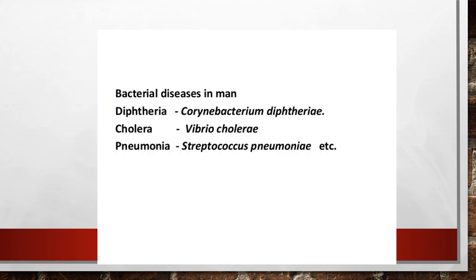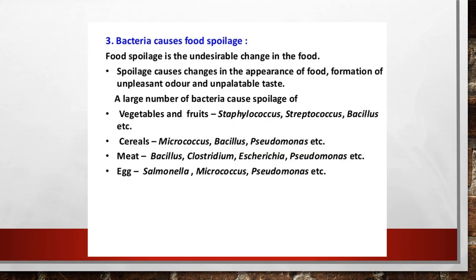Bacteria causing diseases in human beings include: diphtheria caused by Corynebacterium diphtheriae, cholera caused by Vibrio cholerae, and pneumonia caused by Streptococcus pneumoniae. Regarding food spoilage, bacteria cause undesirable changes in the appearance, smell, and taste of food. Bacteria that cause spoilage of vegetables and fruits include Staphylococcus, Streptococcus, and Bacillus. Cereals are attacked by Micrococcus, Bacillus, and Pseudomonas. Meat is attacked by Bacillus, Clostridium, E. coli, and Pseudomonas.